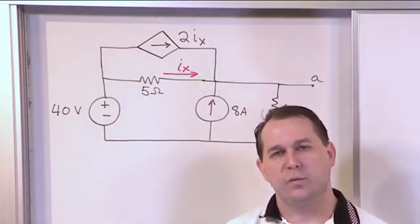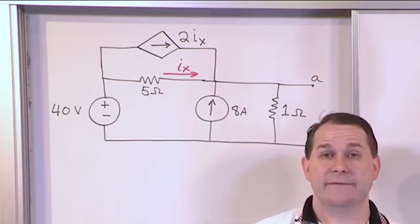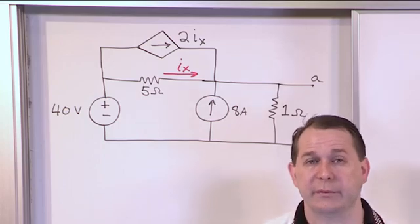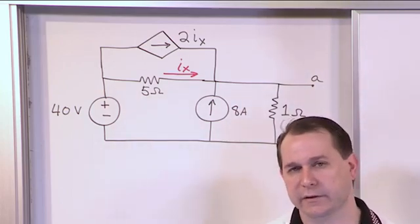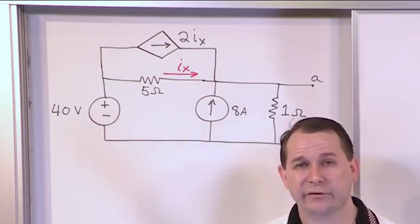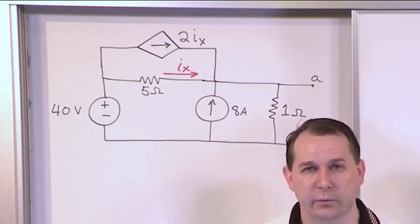So this is our first circuit where we're trying to find the Thevenin equivalent circuit where we have a dependent source of some kind. In this case it's a dependent current source. It turns out you can find Thevenin equivalent circuits if you have dependent current sources or dependent voltage sources, any kind of dependent source that you are used to dealing with.